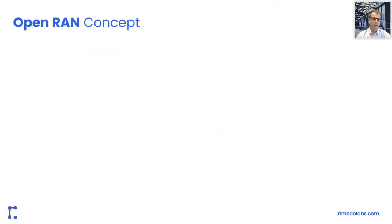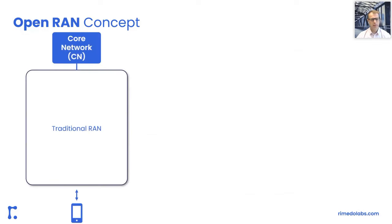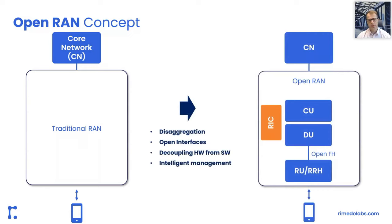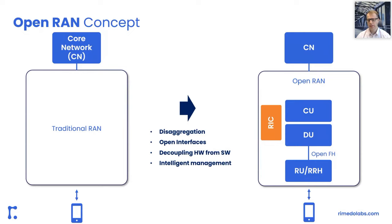On one side we have the Open RAN concept, currently being discussed in Telecom Infra Projects, ORAN Alliance, and multiple other bodies. It basically splits the traditional RAN into multiple entities — multiple base station components. There are four major concepts: first, we disaggregate the traditional base station into multiple entities like central unit, distributed unit, and radio unit. Then we have standardized open interfaces between them, which is the main role of the ORAN Alliance — the Open Fronthaul, E2, and A1 interfaces allowing for multi-vendor deployments.